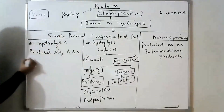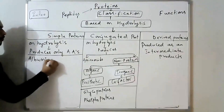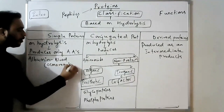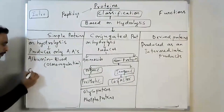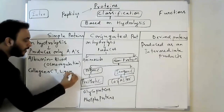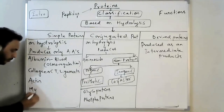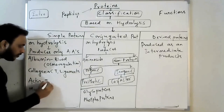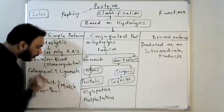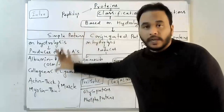Examples of simple proteins: albumin, which is present in blood and maintains osmoregulation; collagen, which is present in connective tissues and ligaments; actin, which forms thin filaments; and myosin, which forms thick filaments in muscle tissue. If you hydrolyze these proteins, you will get only amino acids — nothing else.